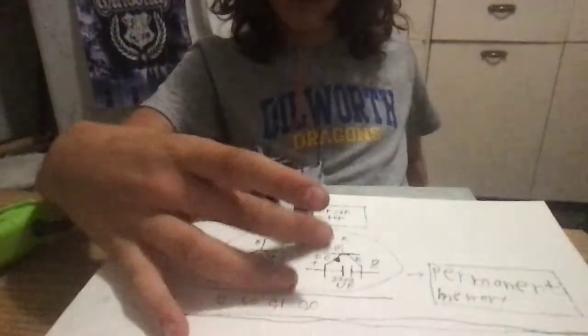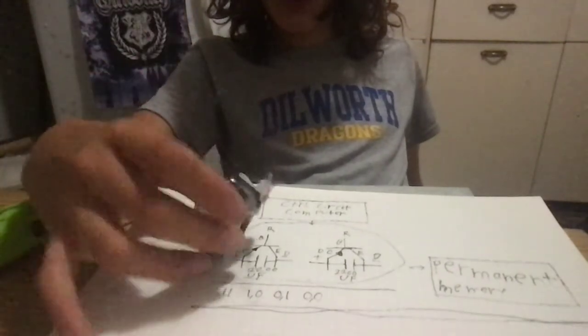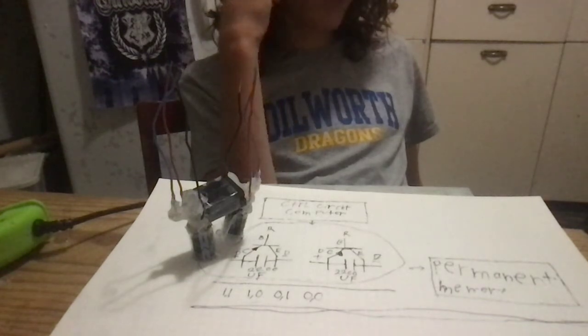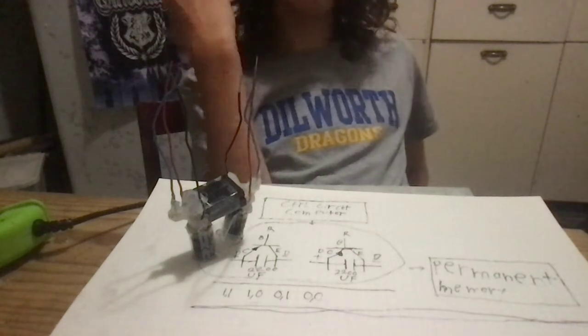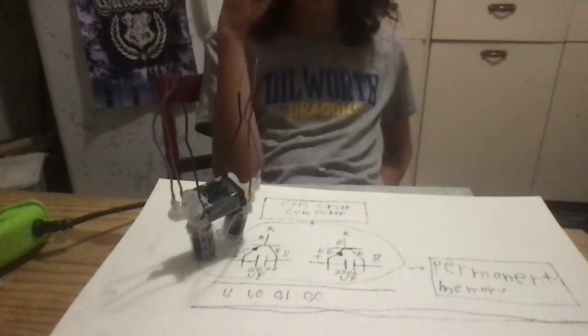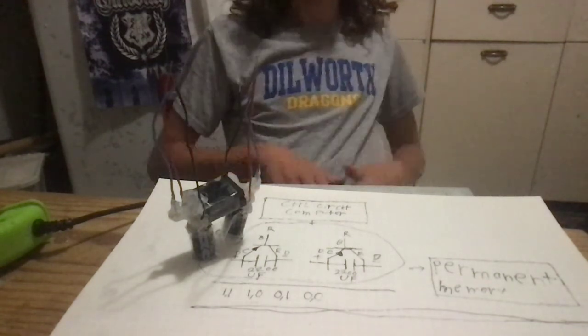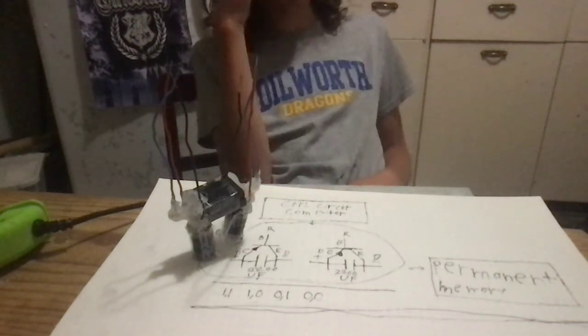Because, well, these are bigger capacitors than normally used. Like a normal ROM chip will use capacitors so small that even a microscope couldn't see them. Like you'd have to use a megascope. I don't know. Anyway.